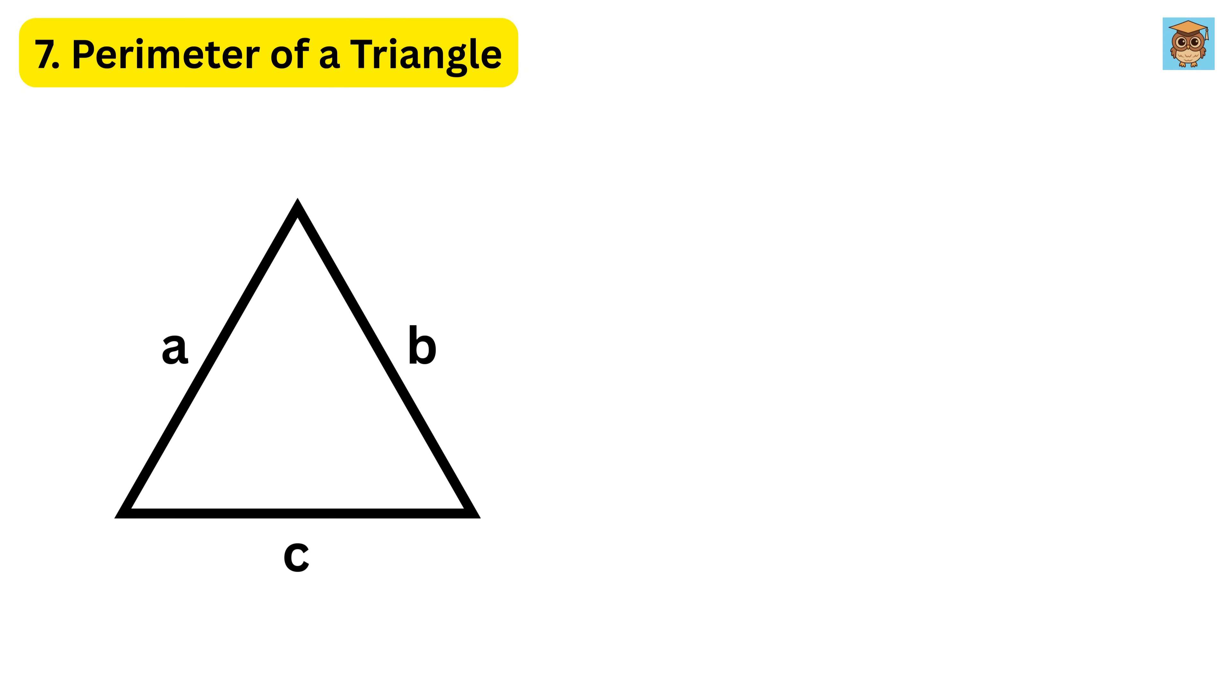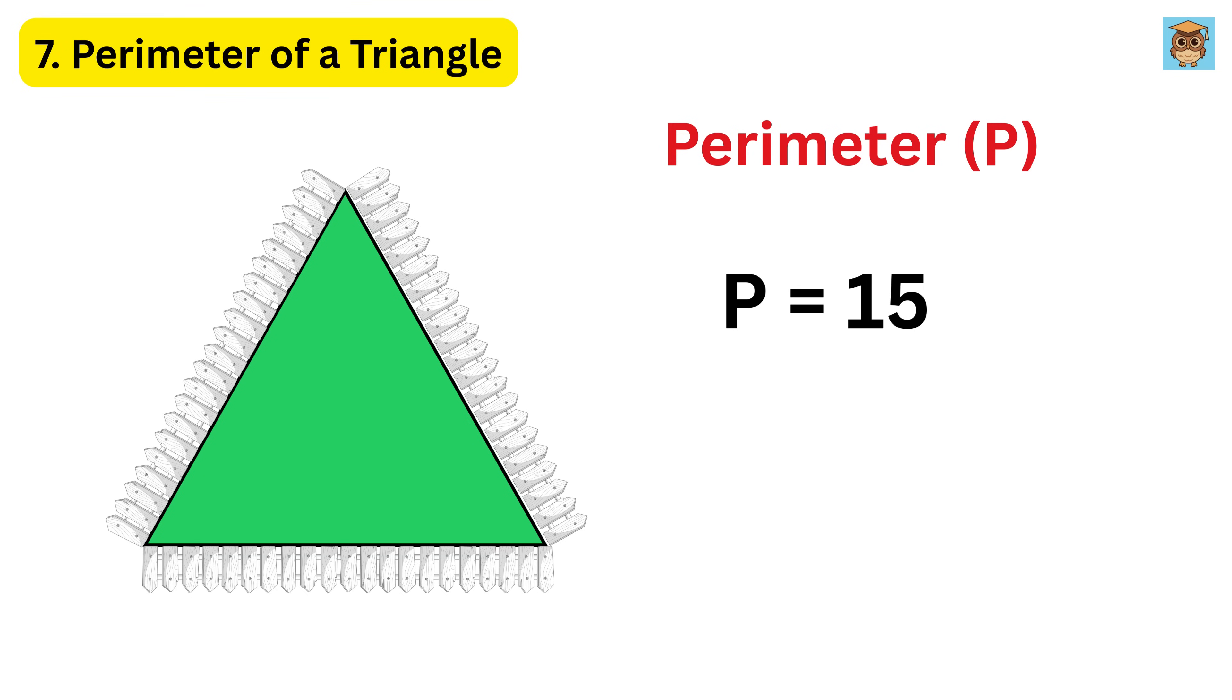7. Perimeter of a Triangle. The perimeter of a triangle is simply the sum of all three sides. If a triangle has sides 4, 5, and 6, the perimeter is 4 plus 5 plus 6, which is 15. Think of it like measuring a fence around a triangular garden. You walk along each side and add up the steps.